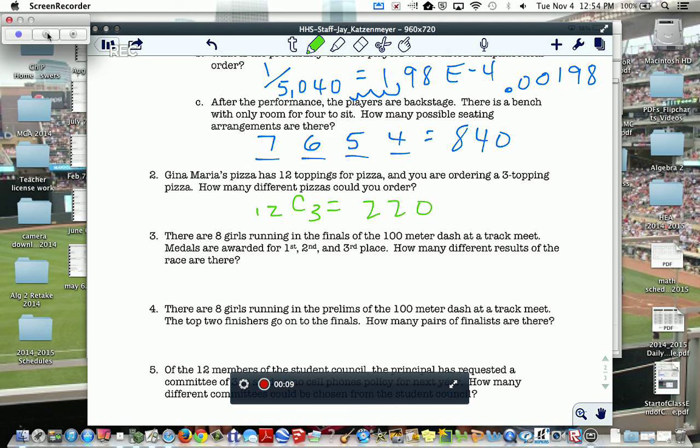There are eight girls running in the finals of the 100 meter dash at a track meet. The medals are awarded for first, second, third place. How many different results are there? So, again, I have eight runners, but this time it matters what place I get. So, I can get first, second, or third. So, if I get first, other people get a place, or I get third, that's a different combination. So, order does matter.